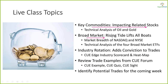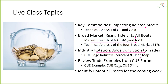As usual, we look at oil and gold — the commodities that tend to affect related stocks. A rising tide lifts all boats: when the broad market goes up, it tends to take many stocks with it, and vice versa. We keep an eye on the broad market through market breadth of NASDAQ and NYSE and also using technical analysis of the four broad market ETFs. We take long and short trades in alignment with industry strength and weakness. We keep an eye on industry rotation using the industry scorecard and heatmap, and we will also look at some trade examples from the Q forum and potential trades for the coming week.